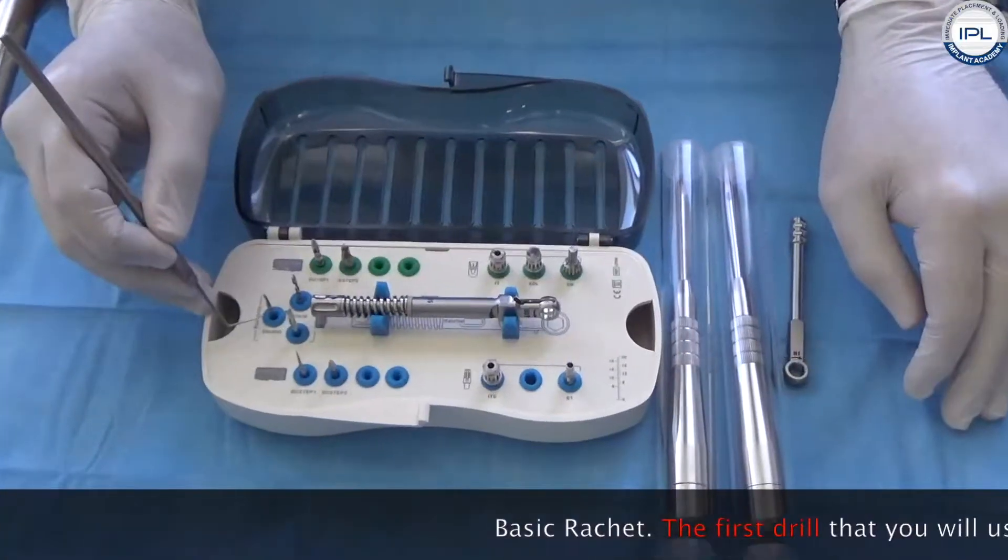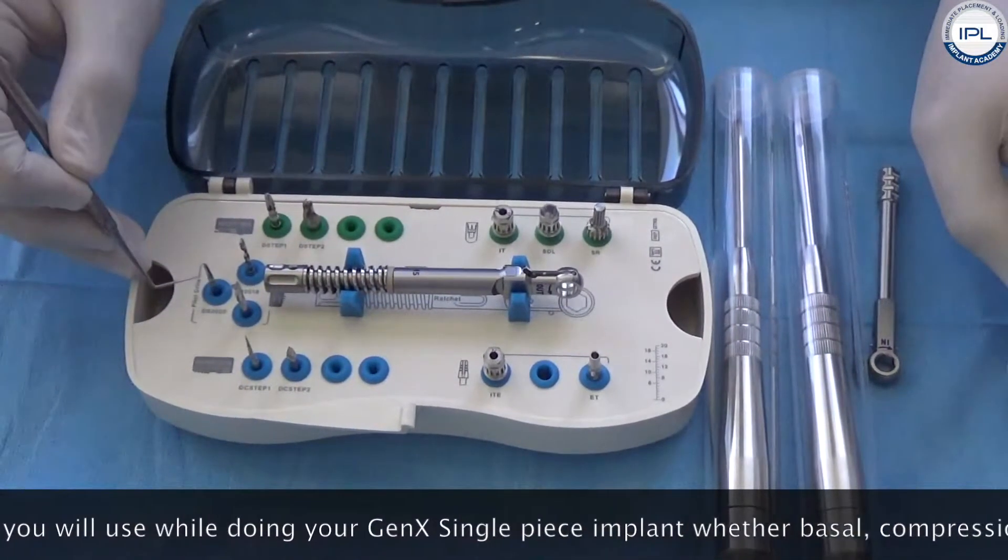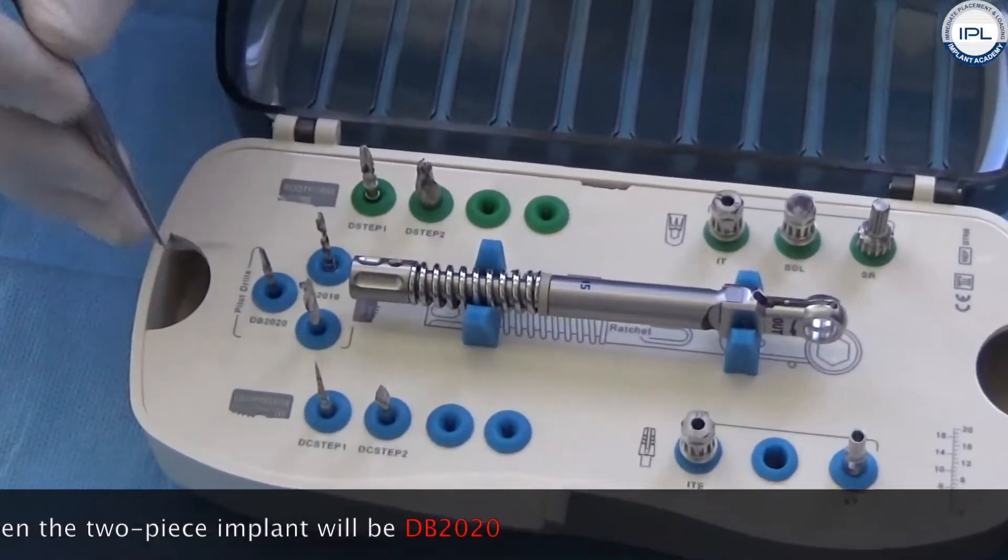This is a basic ratchet. The first drill that you will use while doing your Gen X single-piece implants, whether basal or compressive, even for the two-piece implant, is this drill.